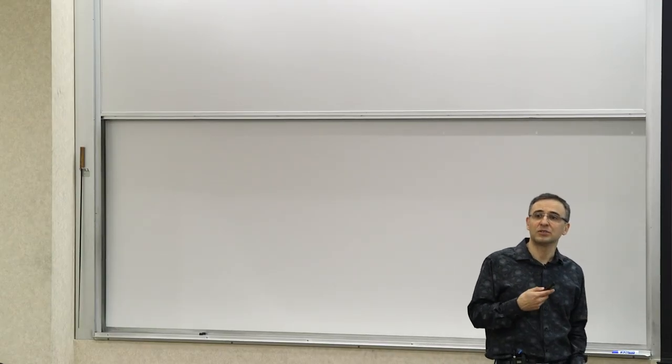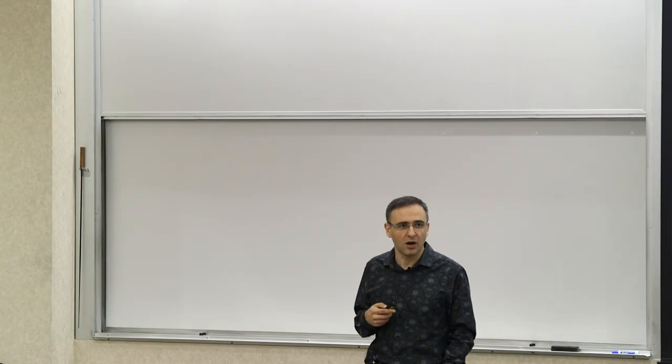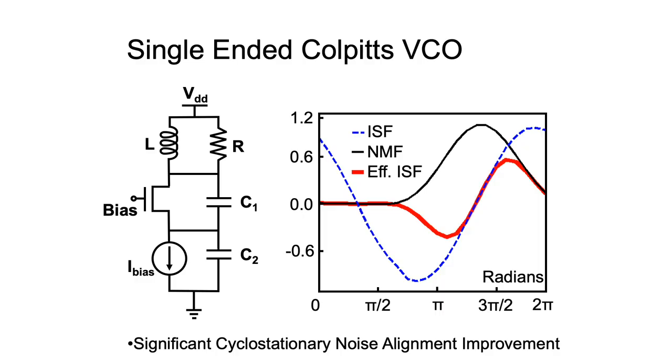Now there was another oscillator that did a really good job in this regard when we looked at it, and that was the Colpitts oscillator, right? If you look at the Colpitts oscillator, this example that we are showing here, this Colpitts oscillator has an interesting property because if you look at the effective ISF, the original ISF, which is again shown in blue, the noise modulating function shown in black, and the effective ISF shown in red, you can see that the effective ISF is significantly reduced because of the alignment of noise, the maximum noise, with minimum sensitivity point.